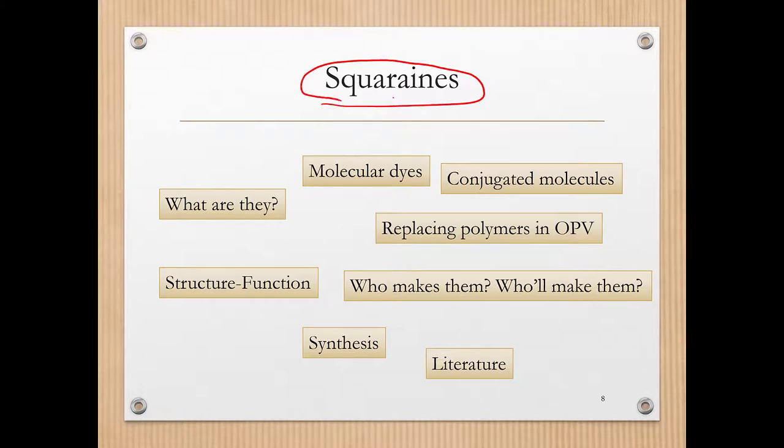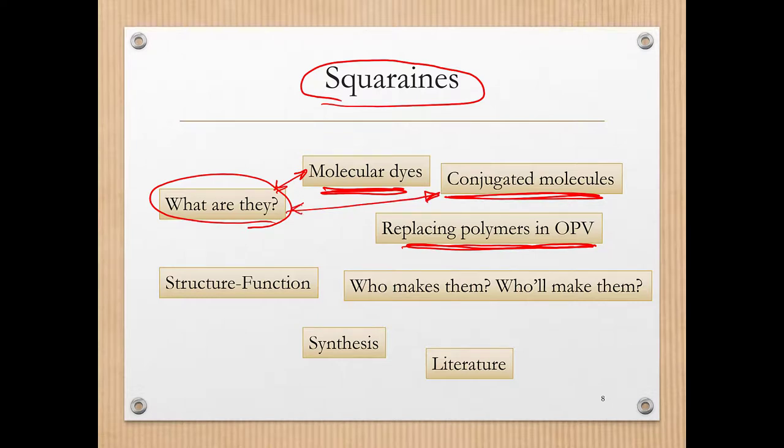Next up, I'm going to talk about squaraines. These squaraines are molecules. Now here is my mind map already written out. These are molecular dyes, they're also conjugated molecules. If I keep digging in the literature, I also find that these conjugated molecules, these small molecules, actually replace polymers in organic photovoltaics. What are molecular dyes? It turns out that this connects with the conjugated nature of these dyes. That tells me there's a certain molecular structure that guides the function of these materials.